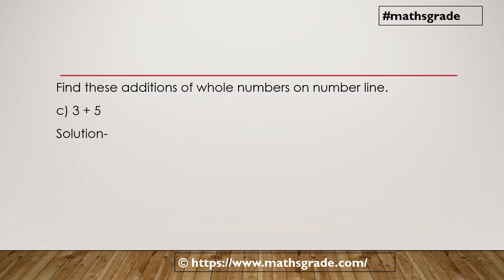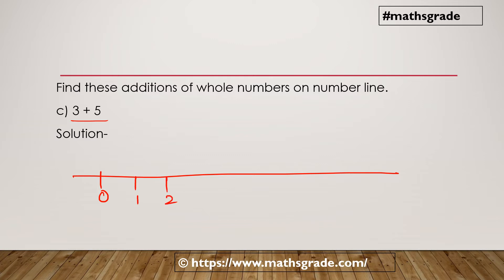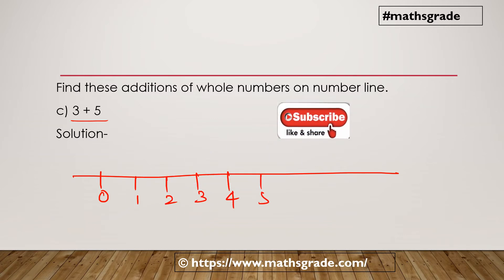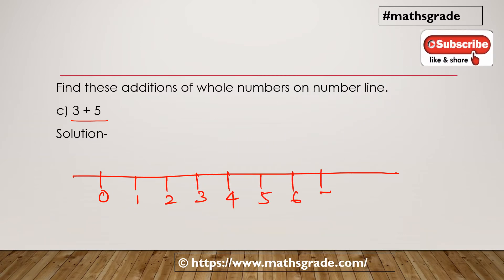Now we will solve Question 3, bit C: 3 plus 5. Find this addition on the number line. First, draw the number line starting with 0 — whole numbers start with 0 — then 1, 2, 3, 4, 5, 6, 7, 8, 9...